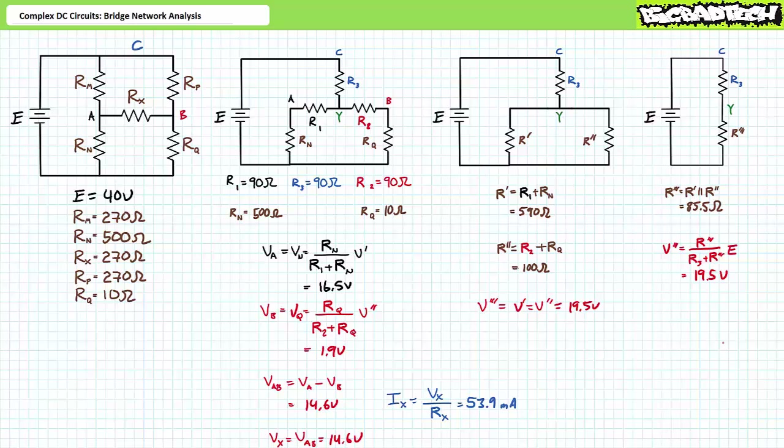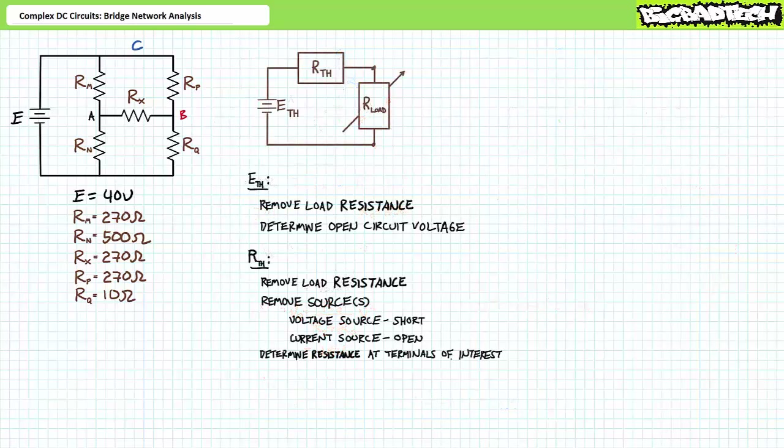In summary, substitution of a Y for a delta in a complex circuit results in a comparatively simpler series-parallel circuit, and the analysis of that simpler circuit maps back to the original complex circuit containing the delta configuration to yield our desired results. Let's try the analysis of the same complex bridge circuit using Thevenin's theorem — we should ideally obtain the same results for Rx.